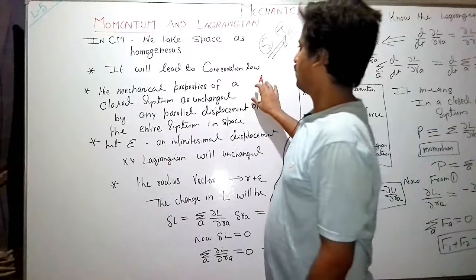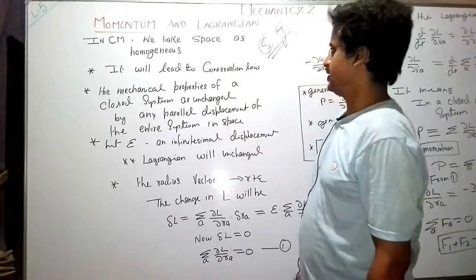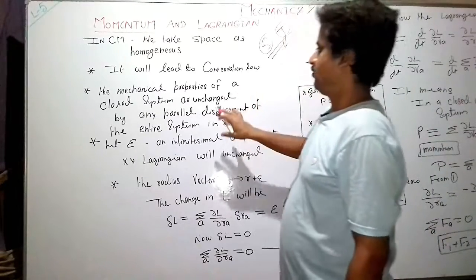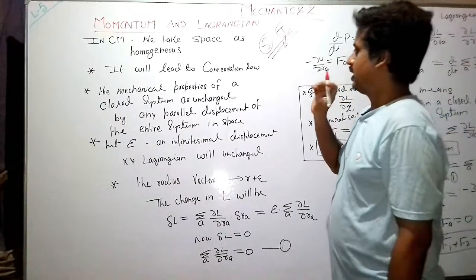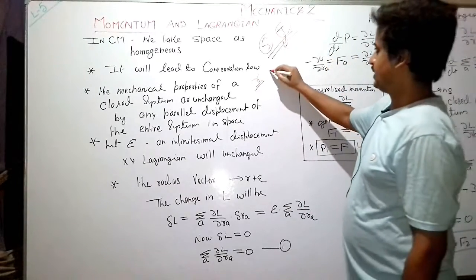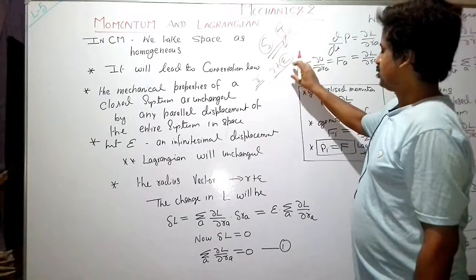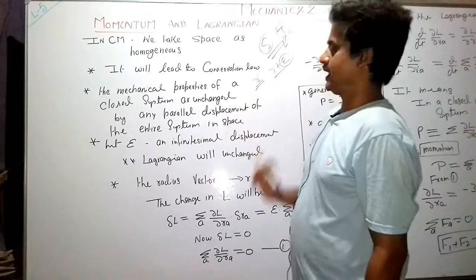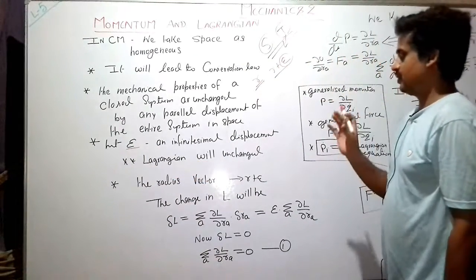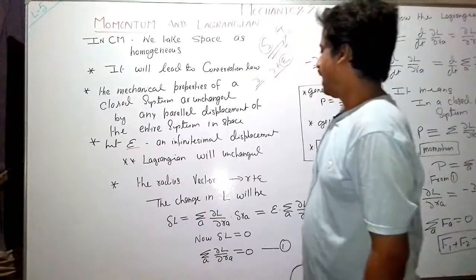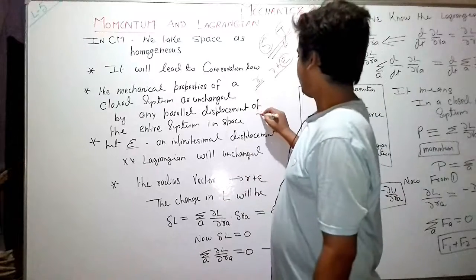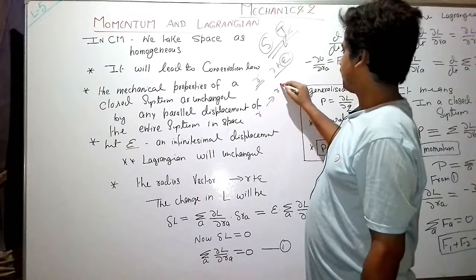What do we mean by space being homogeneous? It means the mechanical properties of any closed system are unchanged if we parallel displace the entire system. That is, if there is a position vector r and we replace it with r plus δ — a very small displacement — then the properties of that mechanical system will remain the same.